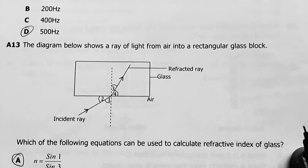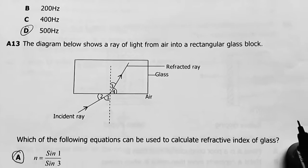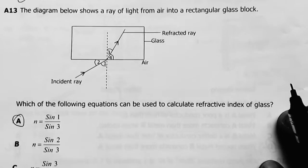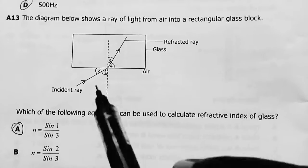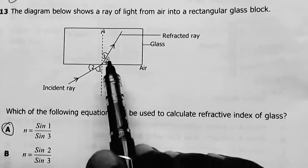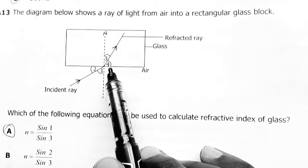Question 13: The diagram below shows a ray of light from air to a rectangular glass block. Which of the following equations can be used to calculate the refractive index of glass? You have to look at the angles that are measured against the normal. This is our normal there.